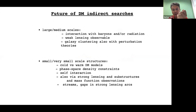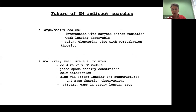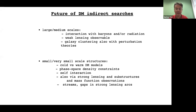In conclusion, we need to tackle the dark matter problem by addressing large, medium, and small scales. At large scales, we can look at dark matter interactions with baryons and radiation, and at weak lensing observables as Euclid will do, plus galaxy clustering. At small scales we address fine structure: phase-space density, self-interacting dark matter, gravitational imaging with strong lensing, mass functions, streams, and gaps in strong lensing arcs. I believe it is going to be full of surprises in the coming years.